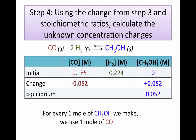For hydrogen gas, it's a little different from the last problem because we don't have a one-to-one stoichiometric ratio. For every mole of methanol that we make, we use up two moles of hydrogen gas. So we made 0.052 molar of methanol; therefore, we must use up two times 0.052, or 0.104 molar of hydrogen gas. Now we've filled in the change row.